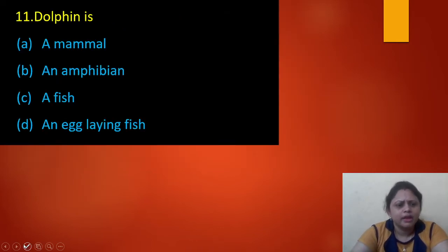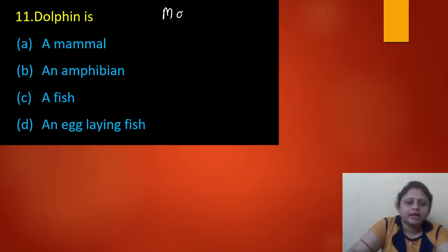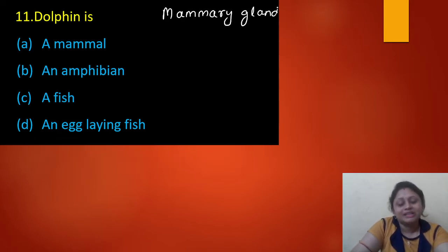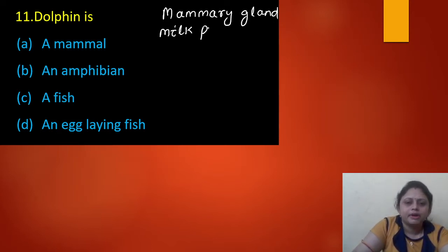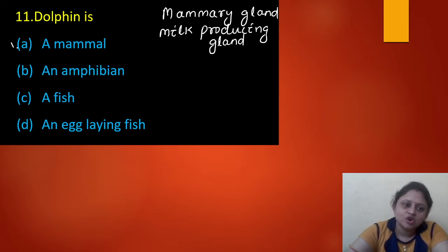Next question: dolphin is a mammal, an amphibian, or a fish? The correct answer is that dolphin is a mammal. Mammals have a mammary gland — which is a milk-producing gland — and they feed their babies with milk. That is why they are known as mammals. So the correct answer is option A — mammal.